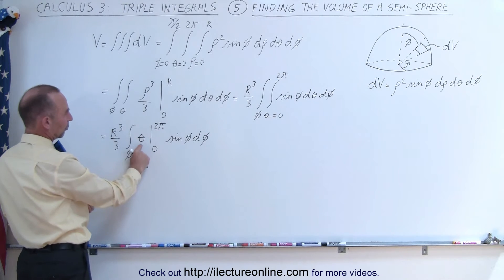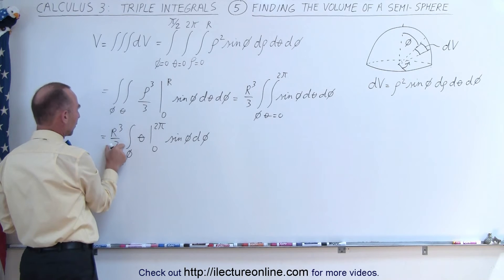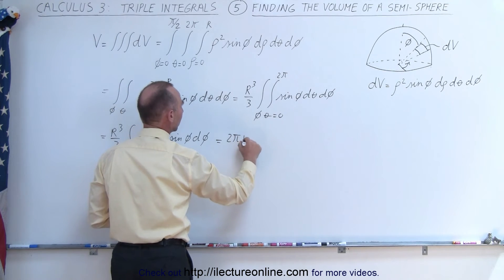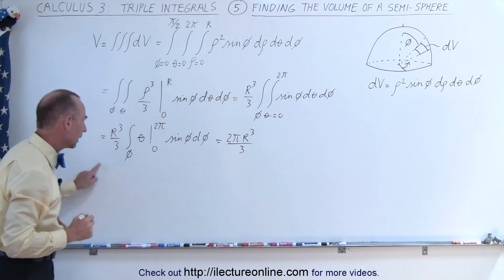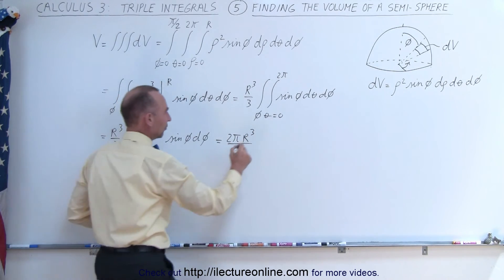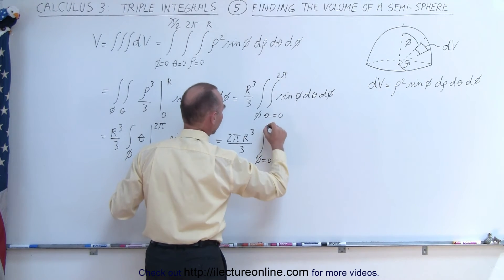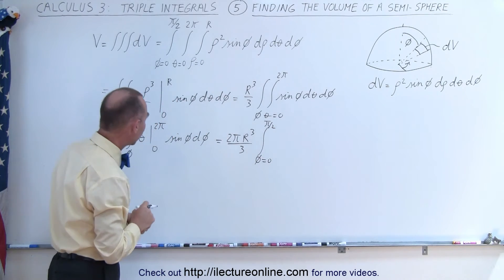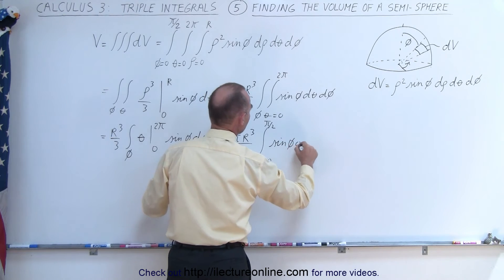So now when we plug in the upper limit, we get 2 pi, plug in the lower limit, we get 0, so we multiply r cubed over 3 times 2 pi, so this becomes 2 pi r cubed over 3. And we still have the single integral left from phi equal 0 to pi over 2, because we're integrating only over 90 degrees, of the sine of phi d phi.